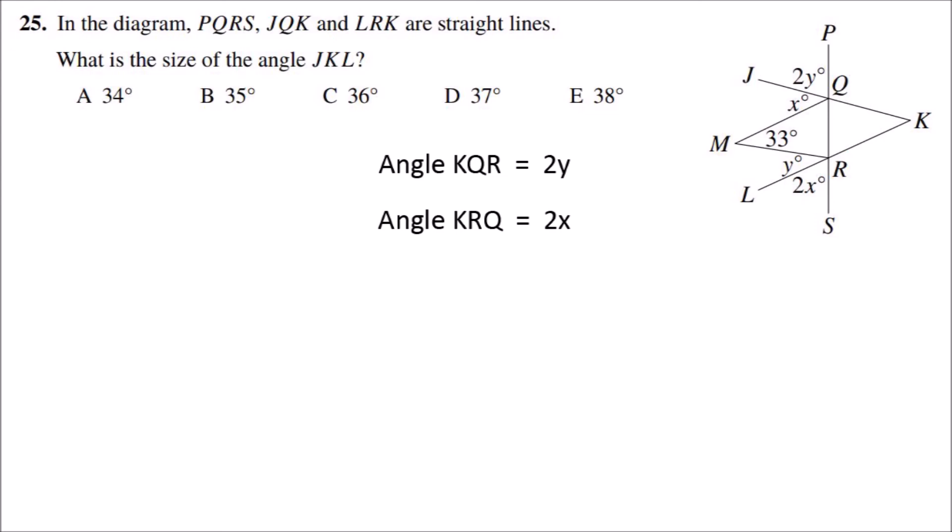So from the triangle KQR we know that angle JKL plus 2x plus 2y equals 180, and so angle JKL equals 180 minus 2 lots of x plus y.